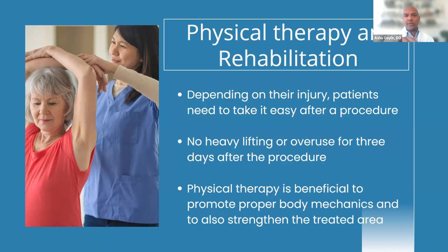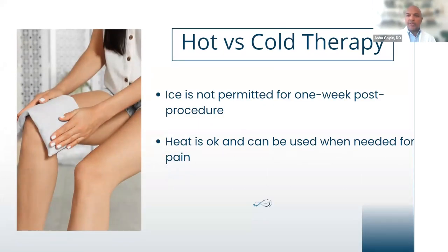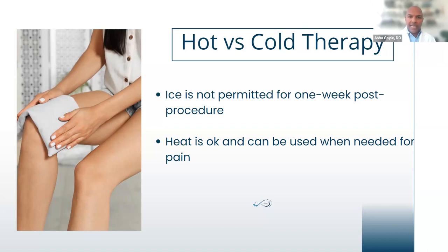Around six to eight weeks, patients can start introducing strength training and more aggressive workouts as tolerated. Cold is also something I have patients avoid. Many patients are now doing cold plunges, which may have longevity benefits, but when we're doing PRP procedures, we don't want to impede blood flow — ice can reduce inflammation and cause vasoconstriction, which is the opposite of what we want post-procedure. I encourage patients to use heat — a heating pad or hot pack for 15 to 20 minutes every one to three hours as needed for the first few days.